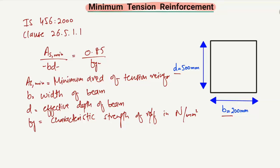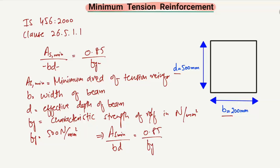Now to find out the minimum reinforcement area for this beam cross-section, we assume we use a steel bar with characteristic strength equal to 500 megapascals or 500 N/mm². We will find the minimum reinforcement area using the equation: As_min / BD = 0.85 / fy.